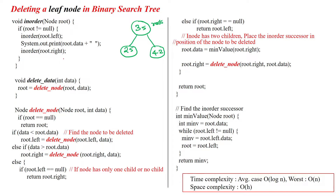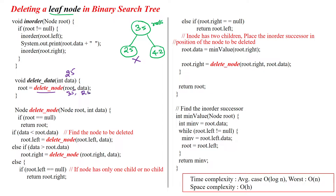Welcome to deleting an element which is available as a leaf node in the binary search tree. I am going to delete the node 25. We are passing the deleting data 25, then inside that we are calling the method delete_node with root value 35 and data to be deleted as 25.